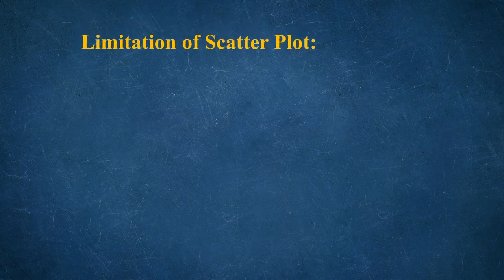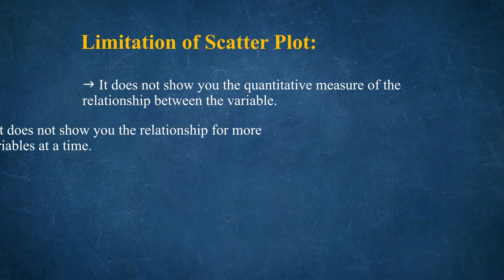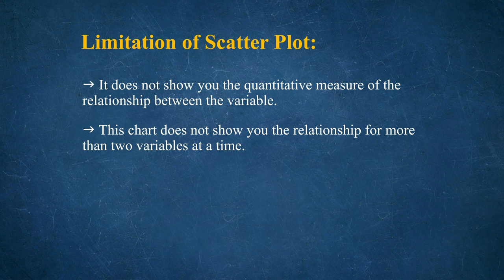Limitations of the scatter plot include certain constraints and stumbling blocks. It does not show you the quantitative measure of the relationship between the variables. The chart also does not show you the relationship for more than two variables at a time. That is why, when we have more than two variables, we shift from correlation to regression analysis, which we will explore in coming sessions.